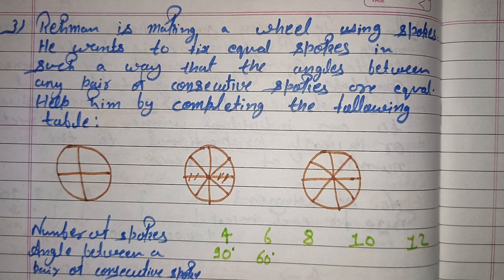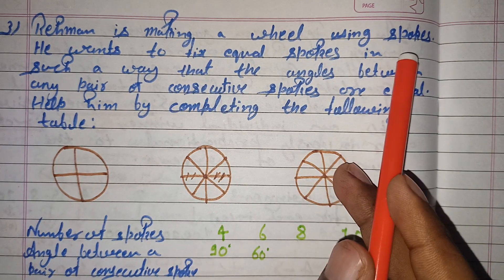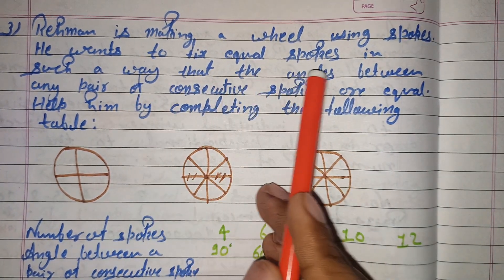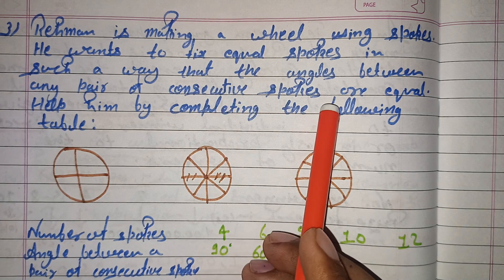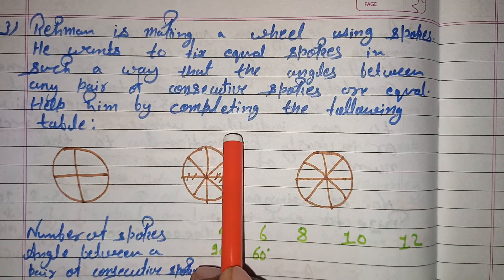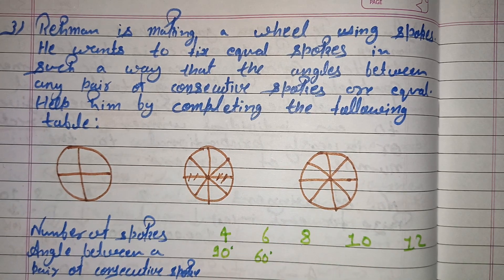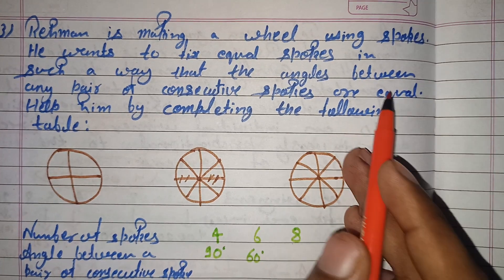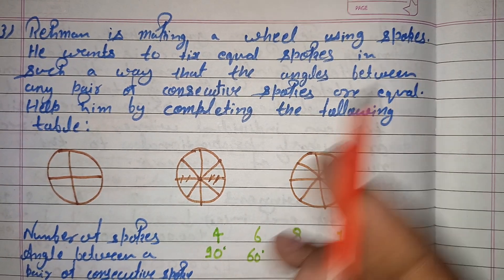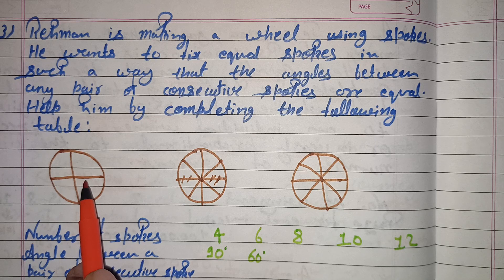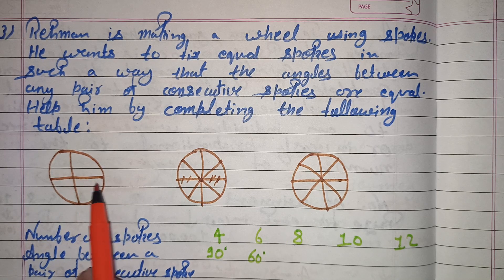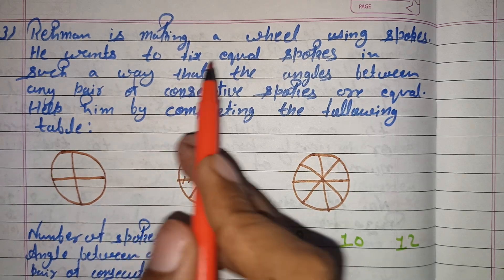Hello students. In today's video we will discuss question number 3 from chapter Direct and Inverse Proportions, Exercise 13.2. The question is: Rehman is making a wheel using spokes. He wants to fix equal spokes in such a way that the angle between any pair of consecutive spokes is equal. Spokes are the rods which can be seen in a cycle or bike wheel.